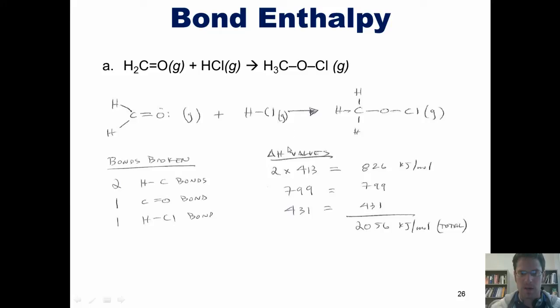413 kilojoules per mole per hydrogen-carbon bond. I multiply that by 2 and get this overall number. And I get the other numbers indicated here.